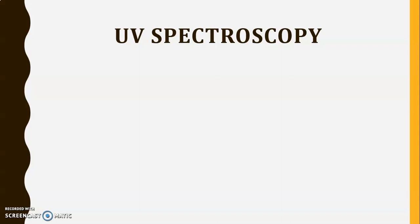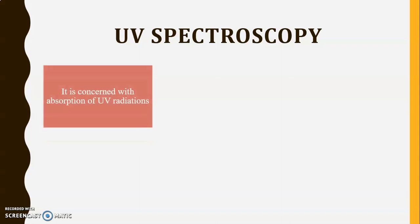While coming back to the ground state, a certain amount of energy is emitted. In spectroscopy, we are either measuring the energy that is absorbed or the energy that is emitted. In UV spectroscopy, it is concerned with the absorption of UV radiations — the rays falling in the ultraviolet region — that is why it is known as UV spectroscopy.